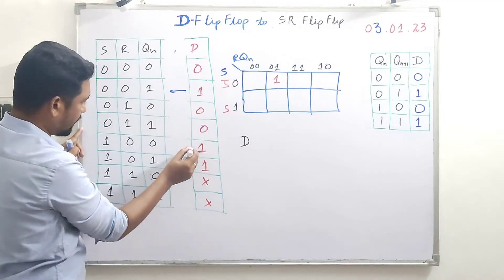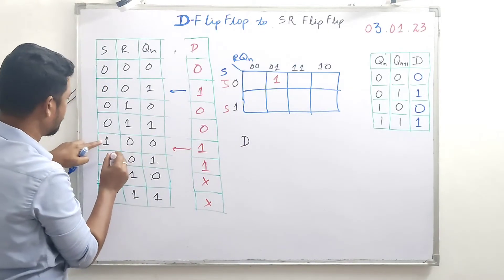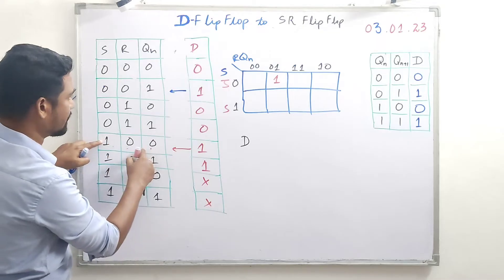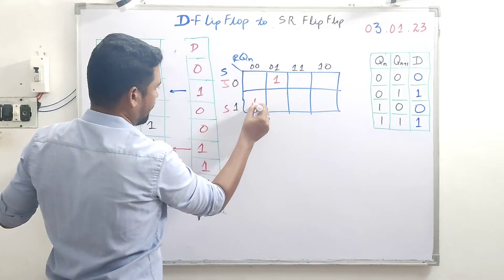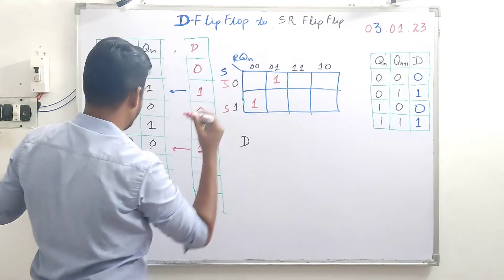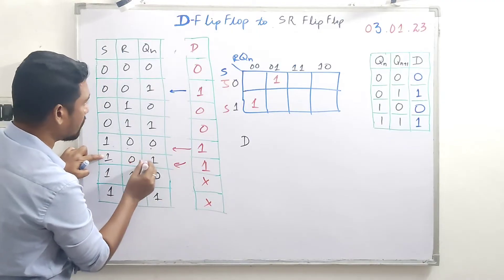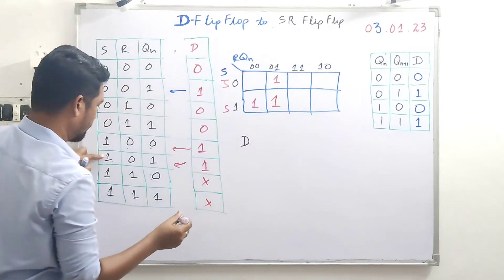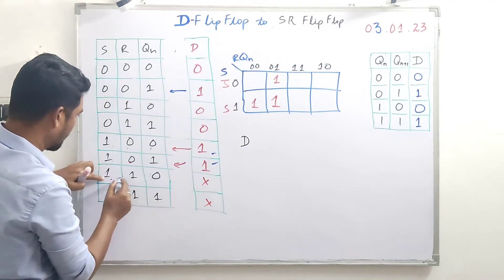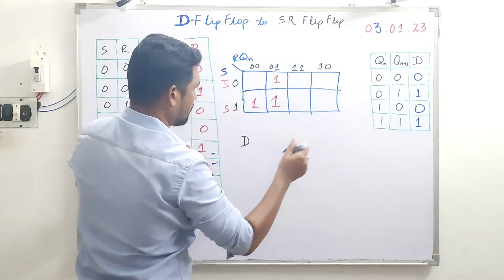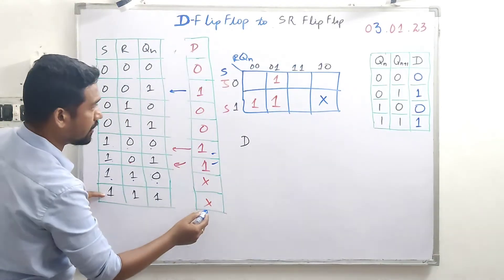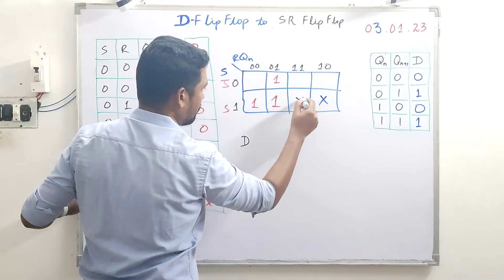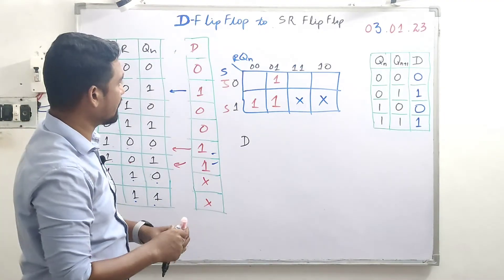Continuing to fill the K-map: another 1 appears for the combination S=1, R=0, Qn=0 — we place a 1 in that cell. Another 1 for S=1, R=0, Qn=1 — we place a 1 there as well. Don't cares appear for the 1-1 combinations: S=1, R=1, Qn=0 gets a don't care, and S=1, R=1, Qn=1 also gets a don't care.